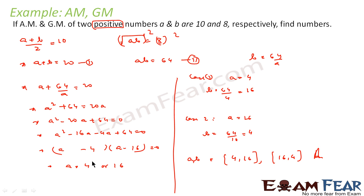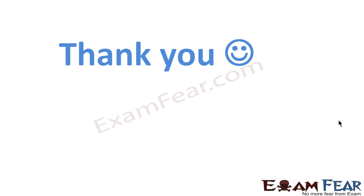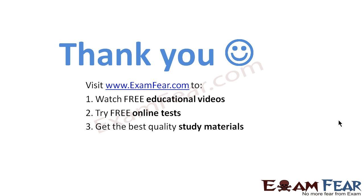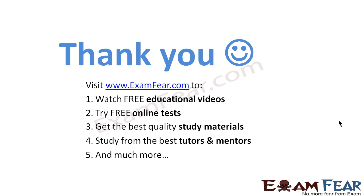In case 1, when a equals 4, b equals 16. In case 2, when a equals 16, b equals 4. Both solutions satisfy our equations. Thus the numbers are (4, 16) or (16, 4). Thank you! Visit examfear.com to watch free educational videos, try free online tests, get the best quality study materials, and study from the best tutors and mentors. Thanks once again!